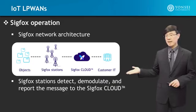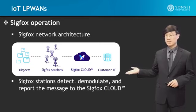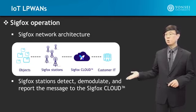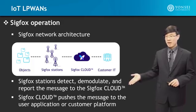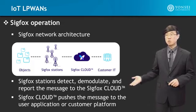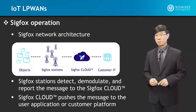When objects send their signal to the SIGFOX stations, the stations detect and demodulate the signals, then report the messages to the SIGFOX cloud. The cloud then pushes the messages to the user application or the customer platform. This is how the service is conducted.